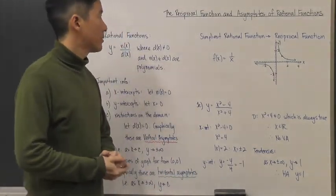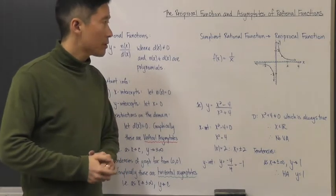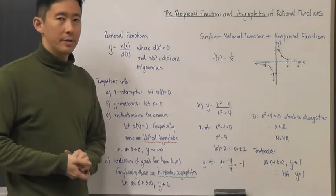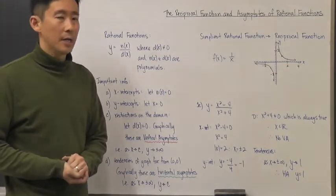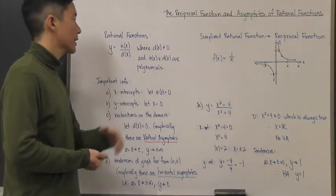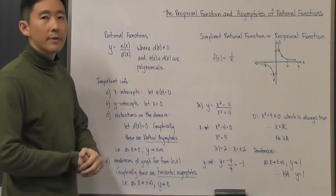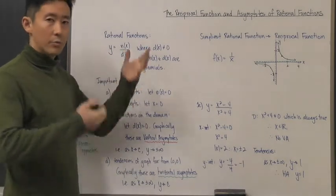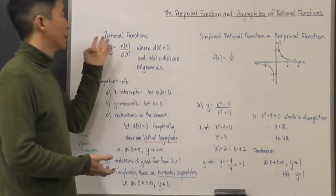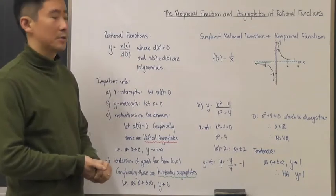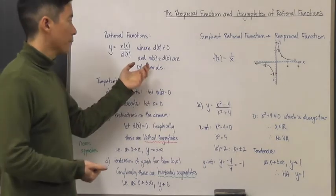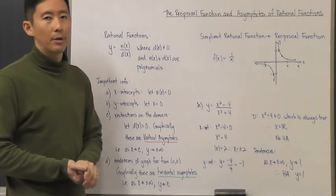Let's take a look at the reciprocal function and asymptotes of rational functions. A rational function is any function in the form of n(x) over d(x), where n represents the numerator and d represents the denominator. Having a numerator and denominator means you have a fraction — a ratio — which is why these are called rational functions. Of course, d cannot equal zero because you can't divide by zero, and n(x) and d(x) must be polynomials.